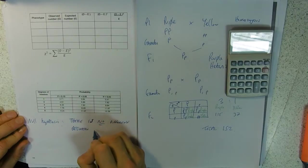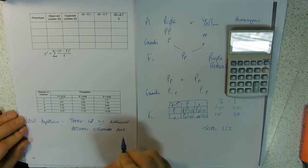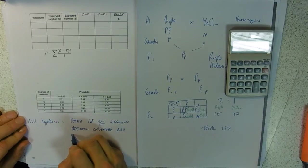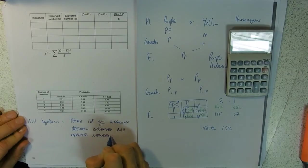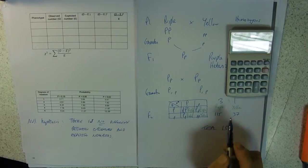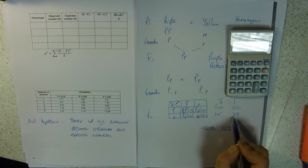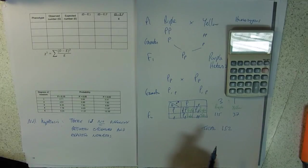between our observed numbers and what we'd expect from our ratio. So our null hypothesis is saying yeah, 37 - we want 38 but there's only 37, it's near enough, it's fine.